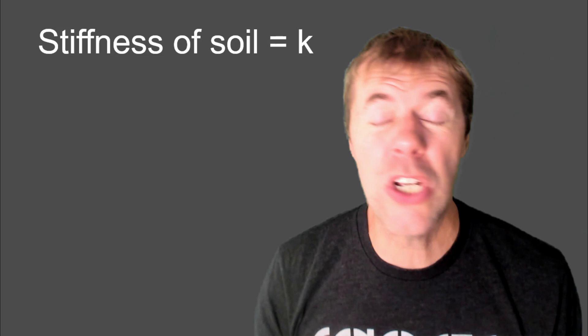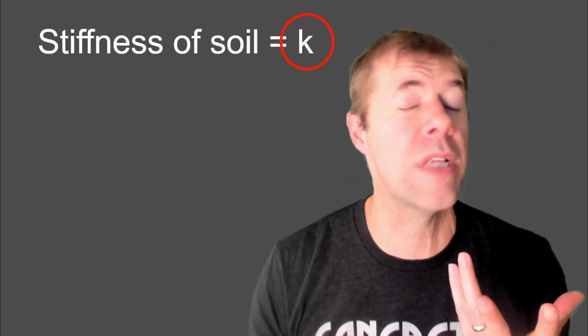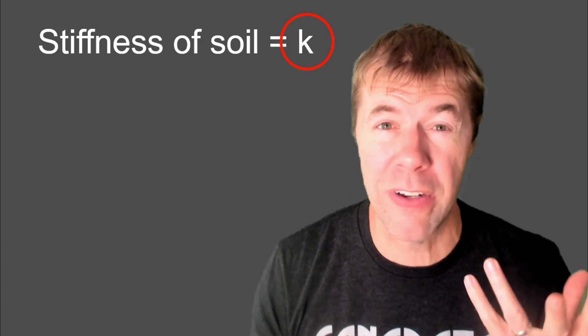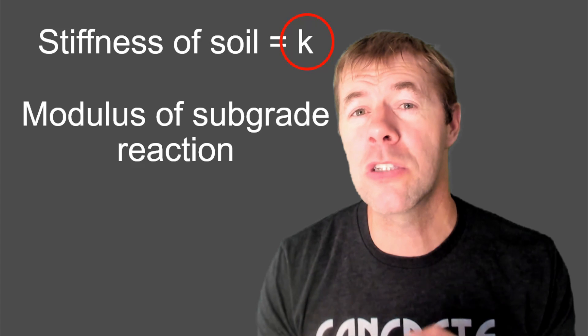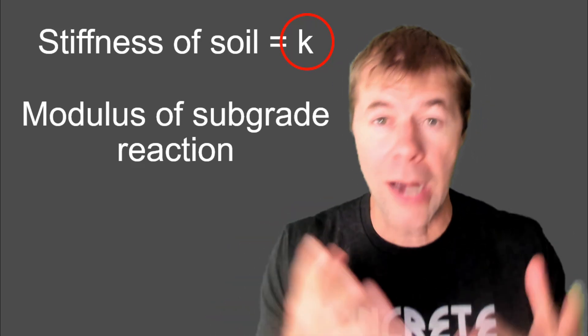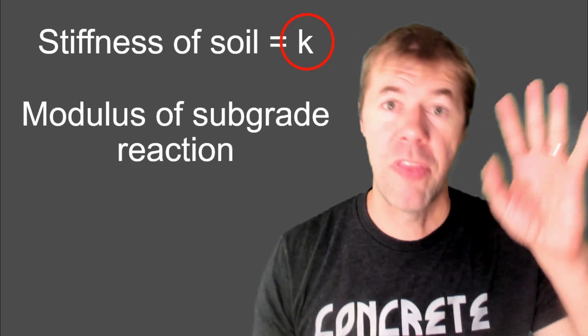So stiffness of soil is usually called K for engineering terms. And this K has a special name. We got our names for this stuff, and they're not always good. Like for example, this one is the modulus of subgrade reaction. I don't know why they called it that. I would just call that the stiffness of the soil. But yeah, that's what they call it.